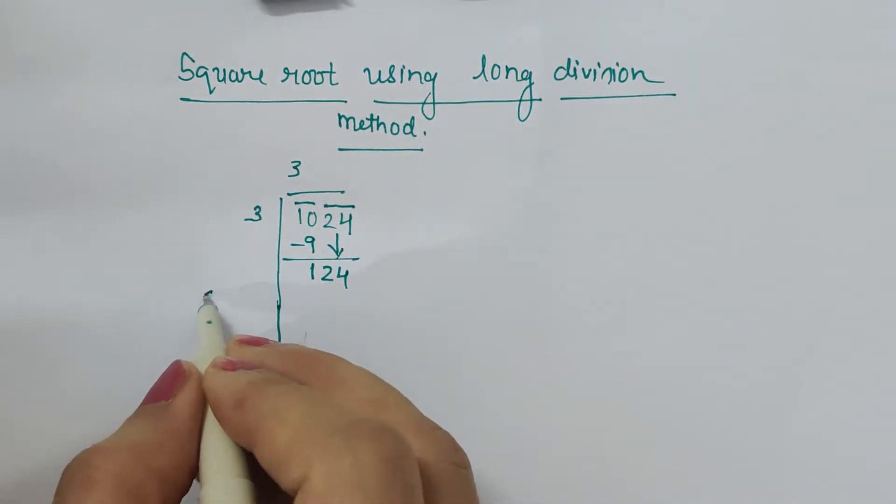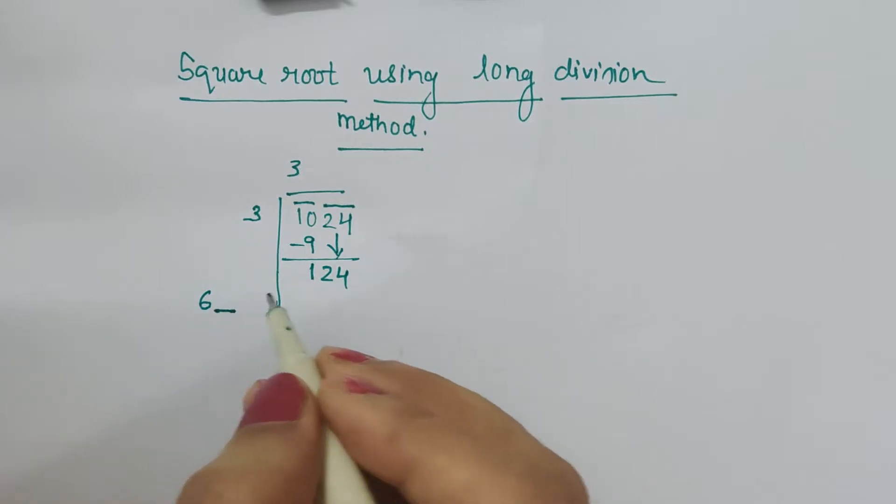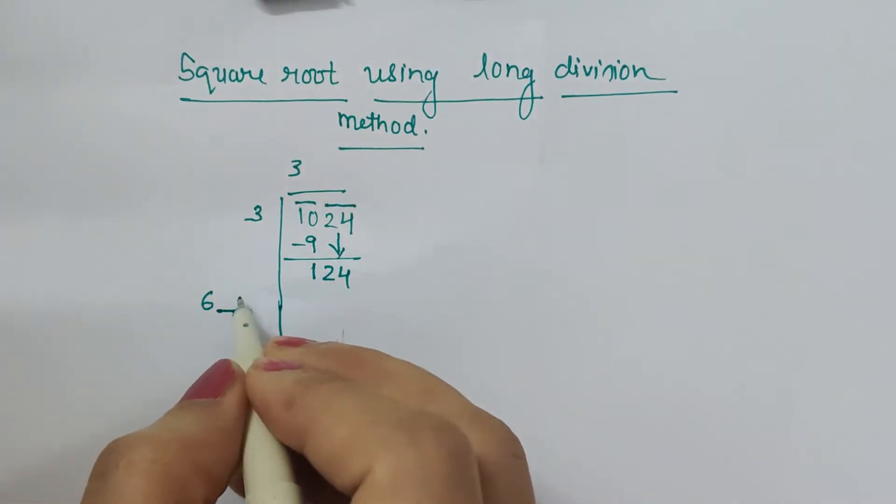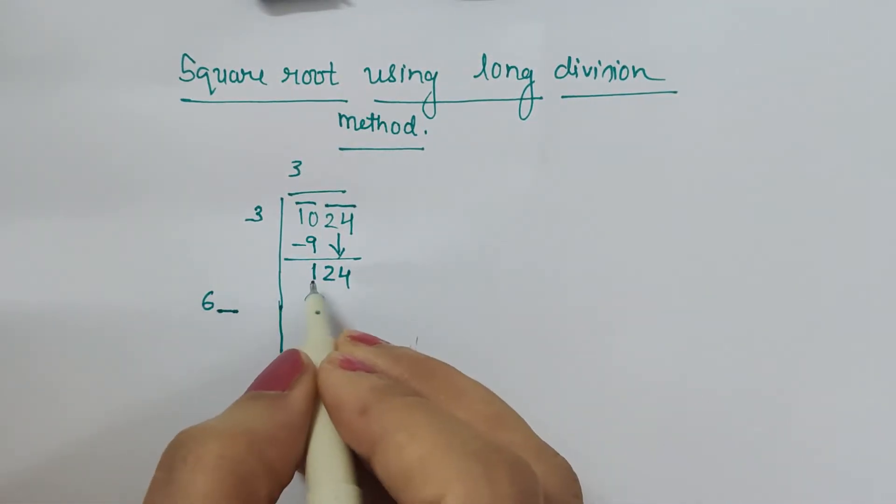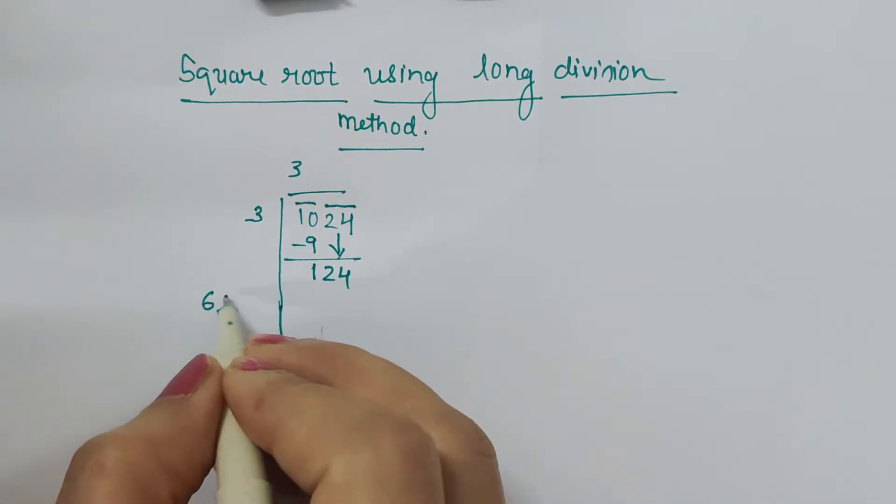Now it is 6. We have to check one more extra digit along with 6, like 61×1, 62×2, 63×3, by checking what gives us 124.